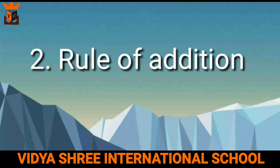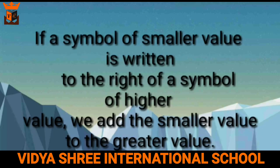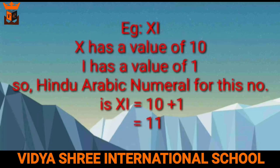The second rule is the rule of addition. If a symbol of smaller value is written to the right of the symbol of higher value, we add the smaller value to the greater value. For example, XI — here X has a value of 10 and I has a value of 1, so the Hindu-Arabic numeral for XI will be 10 plus 1, which is 11.